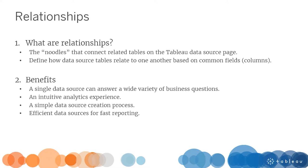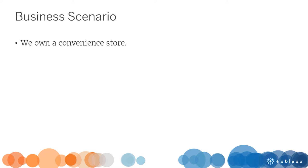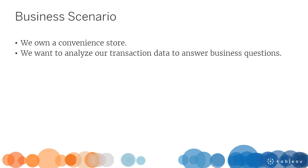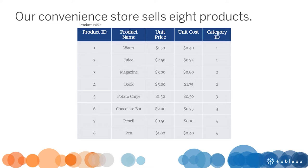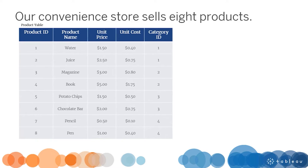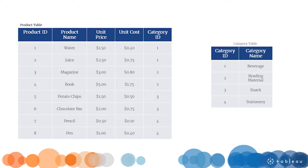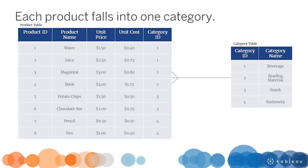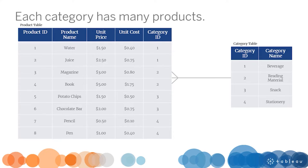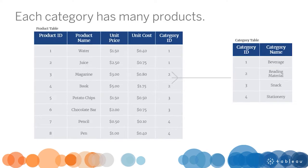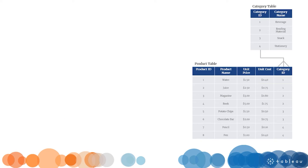Before jumping into Tableau Desktop, let's familiarize ourselves with our business scenario. We own a convenience store and want to analyze our transaction data to answer business questions. Our convenience store sells eight products. Each product has a unique product ID, a product name, unit price, and unit cost. Each product falls into one category, and each category has many products.